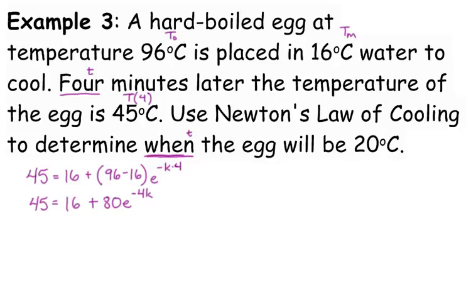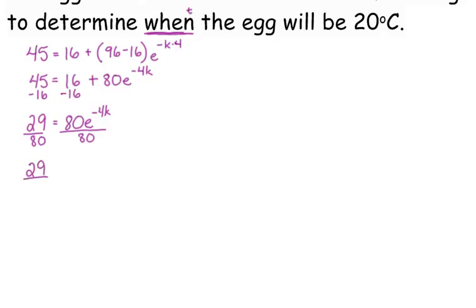We need to solve this like we've been solving all our other equations. Start by subtracting 16. 45 minus 16 is 29. That equals 80 e to the negative 4k. Divide by 80. 29 over 80 doesn't simplify, so I'm just going to leave that in fractional form. We definitely cannot rewrite 29 over 80 as base e, so we need to write in logarithmic form. Natural log of 29 over 80 equals negative 4k. We need to divide by negative 4.